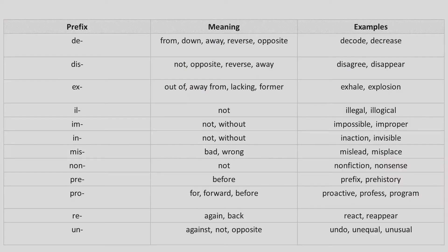See on your screen some of the commonly used prefixes with their meanings and examples. I will read out a few of the common ones used on a day-to-day basis. DE is a prefix which means down, reverse, or opposite — for example, decode, decrease. DIS is another prefix which again means not or forms the opposite — for example, disagree, disappear.